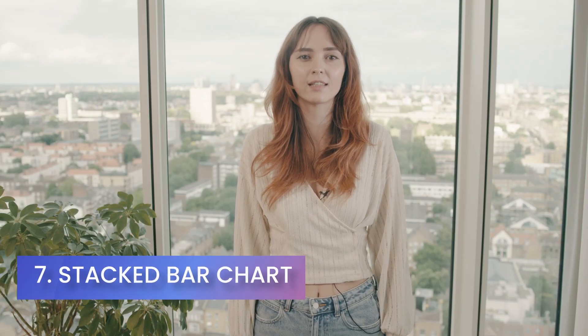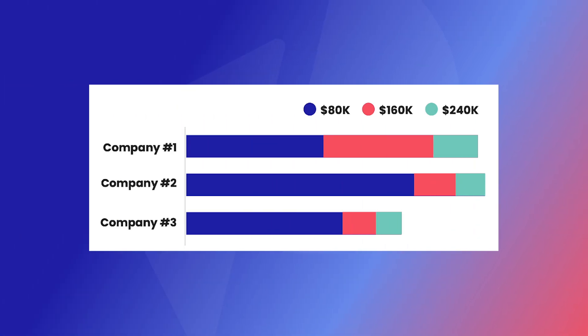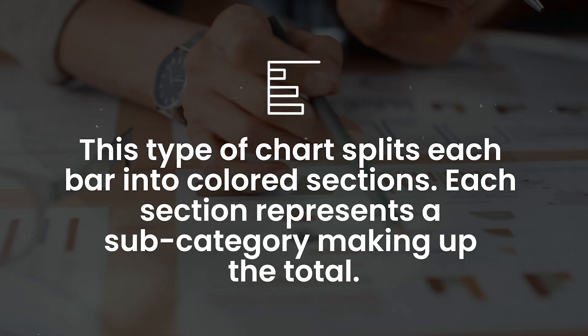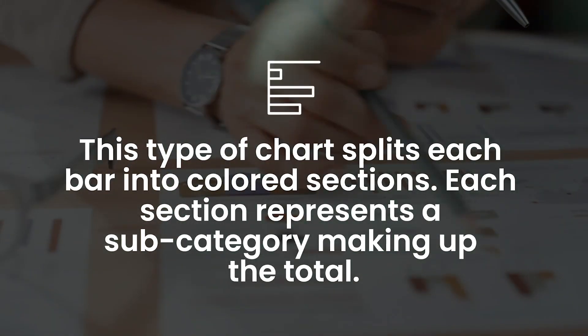Now let's move on to the stacked bar chart. This type of chart splits each bar into colored sections, where each section represents a subcategory making up the total. To put it in money terms, let's say I stack regional sales data within each quarterly earnings bar — one color for Europe, another for North America, another for Asia, and so on. With a stacked bar chart, you can instantly observe quarterly performance and regional contributions.